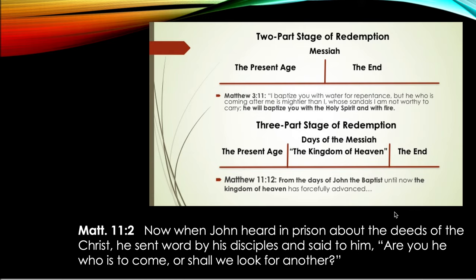The older expectation is what we could call a two-part stage of redemption — what Flusser calls a bipartite state. The present age carries forward until the Messiah, the Redeemer, comes, and then we're at the end — the Acharit HaYamim, the end of days. With that comes everything expected at the end: resurrection, the vindication of the righteous, punishment of the wicked. All of those things happen at the end with the coming of the Messiah, who is the instrument of judgment.